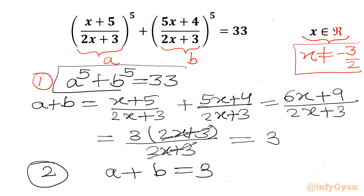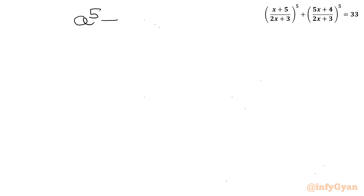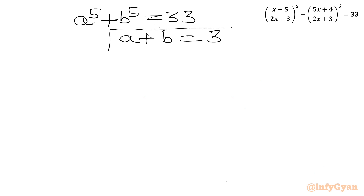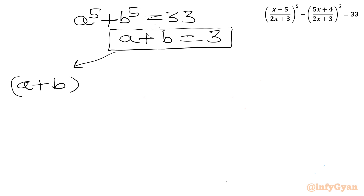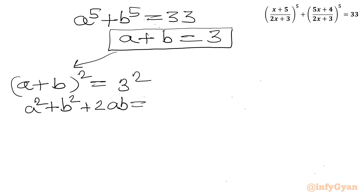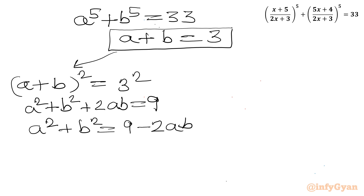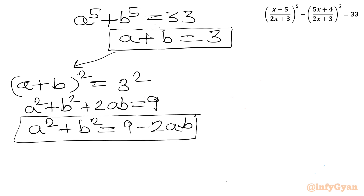Now we have to solve this system of equations: a⁵ + b⁵ = 33 and a + b = 3. Squaring both sides of a + b = 3 gives (a+b)² = 9, so a² + b² + 2ab = 9. Therefore a² + b² = 9 - 2ab. I will call this equation number 3.